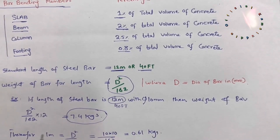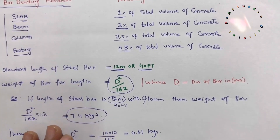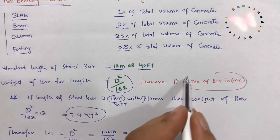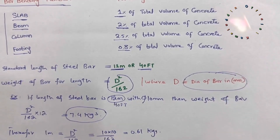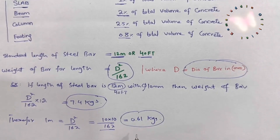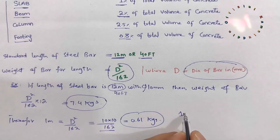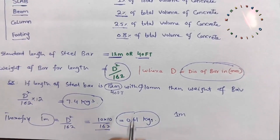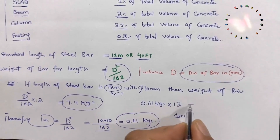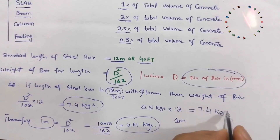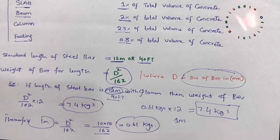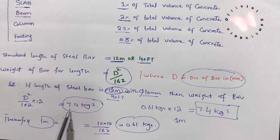If you need the weight of steel for 1 meter with a 10mm diameter: weight per meter = d² ÷ 162 = 10 × 10 ÷ 162 = 0.61 kg per meter. Therefore, for 12 meters: 0.61 kg × 12 = 7.4 kg. So one standard length of 12 meters or 40 feet of 10mm diameter bar weighs 7.4 kg.